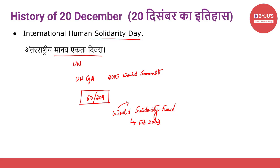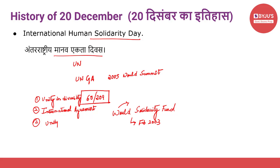International Human Solidarity Day was established under the influence of the UN Millennium Declaration. This day is also celebrated by helping socially and mentally challenged people. The objectives of celebrating this day include celebrating unity in diversity, reminding governments to respect their commitments and international agreements, creating public awareness about the importance of unity, and encouraging initiatives that help eradicate poverty across the world.